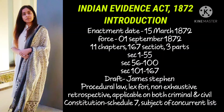Next point: there are 11 chapters and 167 sections, and there are 3 basic divisions. The first division is sections 1 to 55. The second division is sections 56 to 100. The third division is sections 101 to 167. So this is our division structure with 167 sections total.